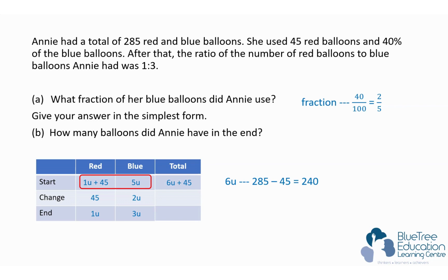6 units equals 285 minus 45, which is 240. So I can find 1 unit easily: 240 divided by 6 equals 40. Now I want to find how many balloons Annie had in the end. Looking at the end, she has a total of 1 unit plus 3 units,